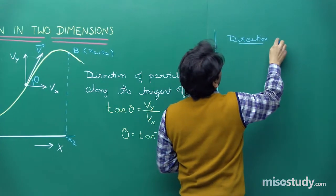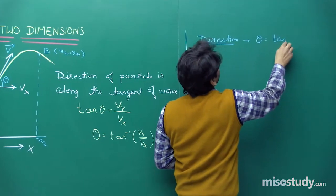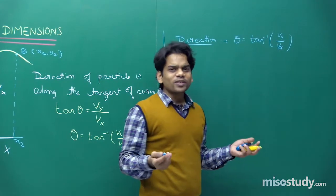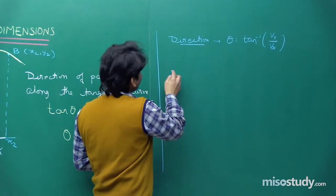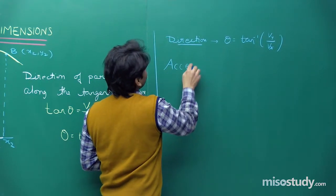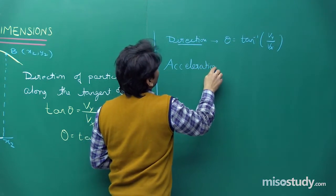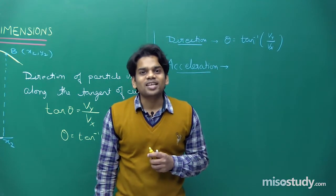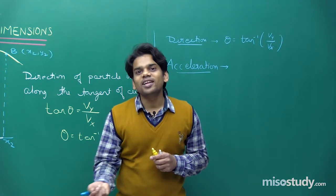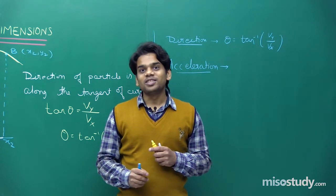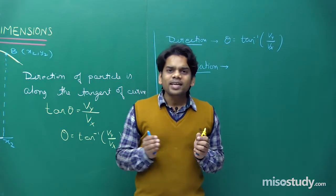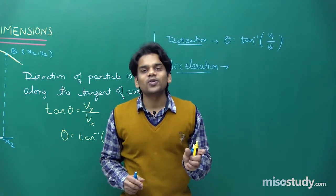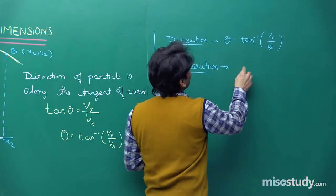To summarize so far: the direction of the particle is theta = tan⁻¹(vy/vx). The position of the particle is given by its coordinates x and y. Now let's talk about acceleration. As the particle moves in a two-dimensional plane, it has an x-coordinate and a y-coordinate, and velocities vx and vy, so acceleration will also have two components.